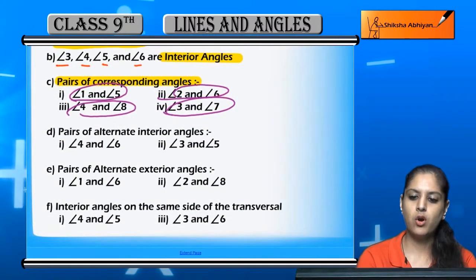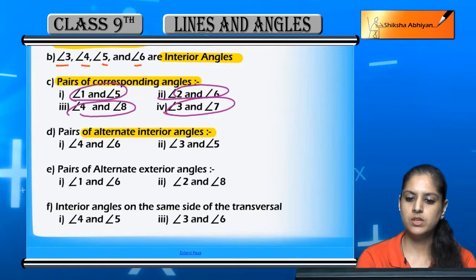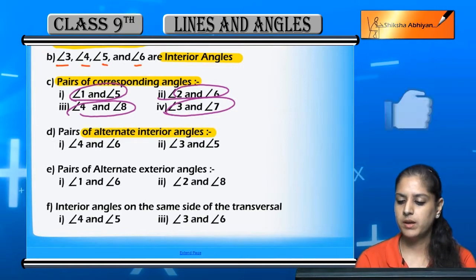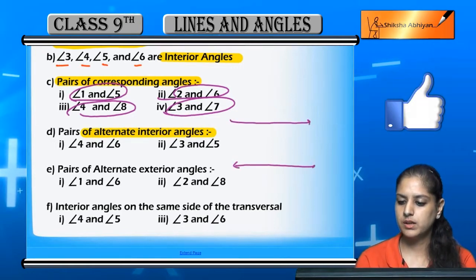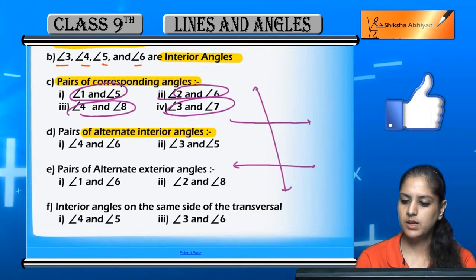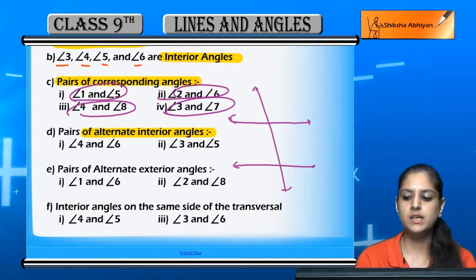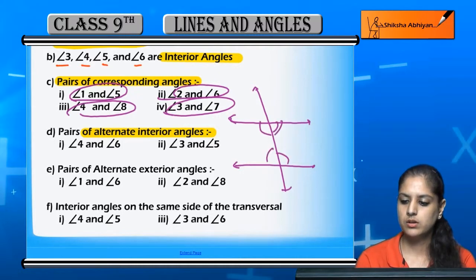Pairs of alternate interior angles. I am making the figure again. So pairs of alternate interior angles will be this and this.